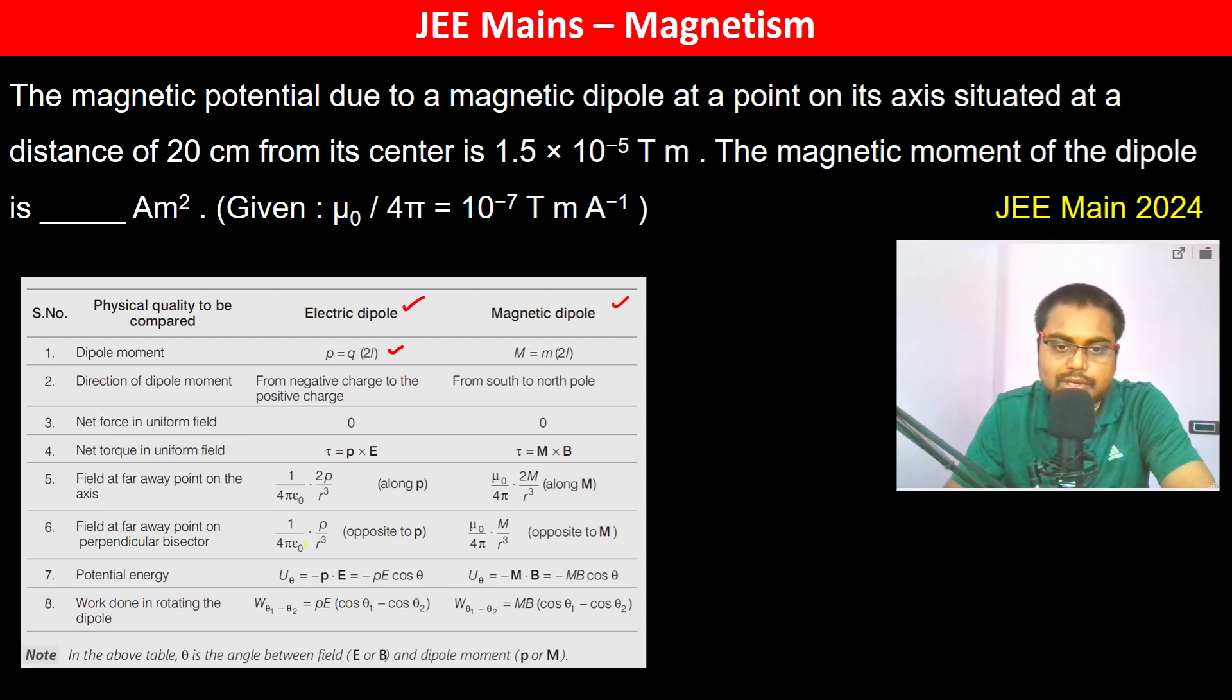The dipole moment is q into 2l; magnetic dipole is m into 2l. The field at a far away point on axis is 1 by 4π epsilon₀ into 2p by r³. For magnetic, it's μ₀ by 4π into 2m by r³.